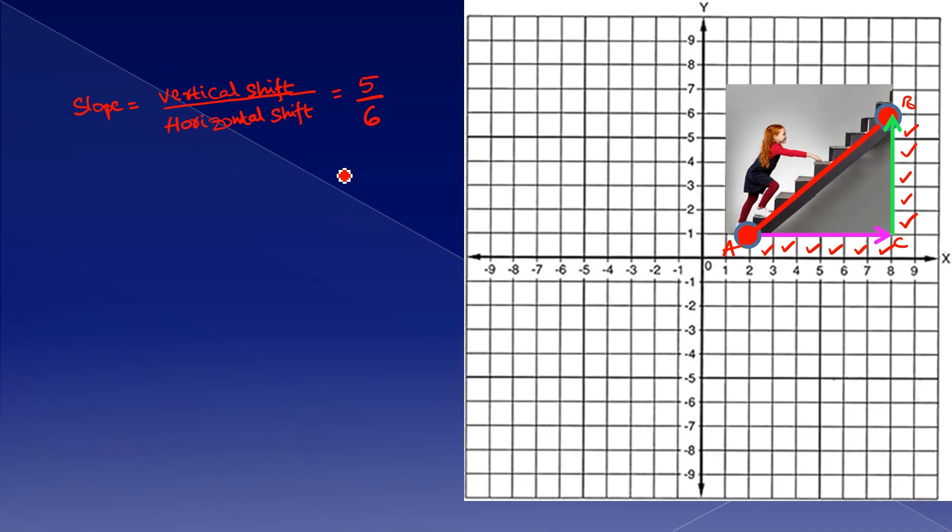Therefore, this 5 over 6 represents the inclination or steepness of the line.